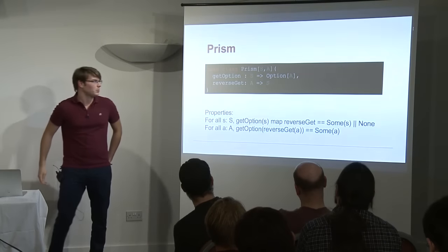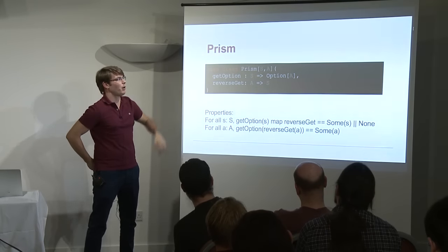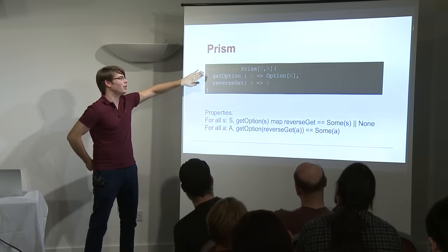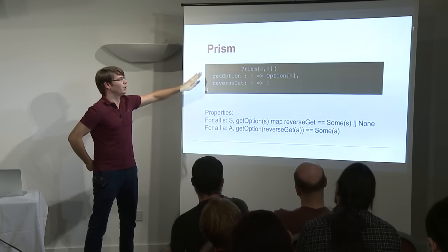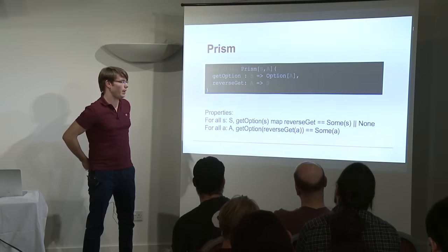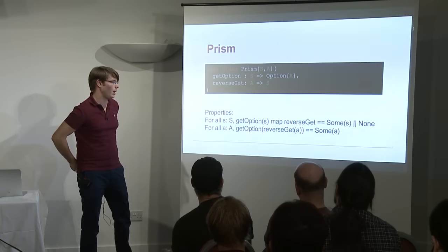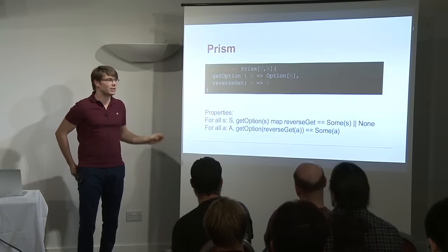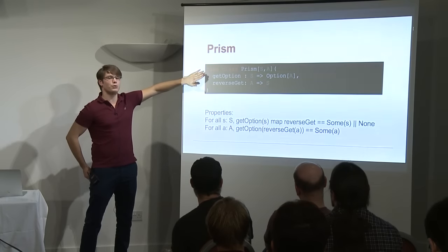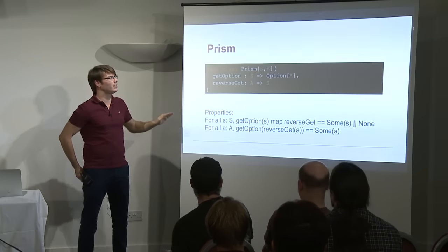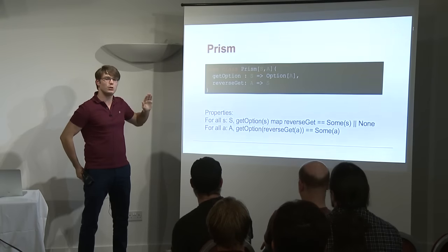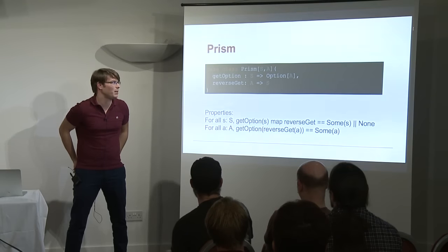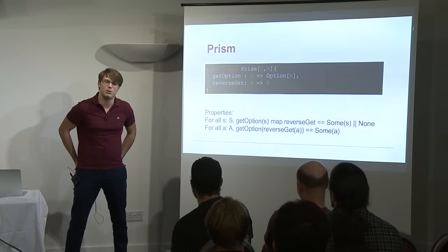We have exactly the same rules as for ISO: if S is in range, we can do the round trip; if it's not, we have no properties. And if we start from an A, we can always do the round trip. In optics, this thing is called a Prism. It's still a case class with two type parameters S and A, and still has a reverse_get function. The only thing that has changed is it has get_option instead of get — a function from S to Option of A.